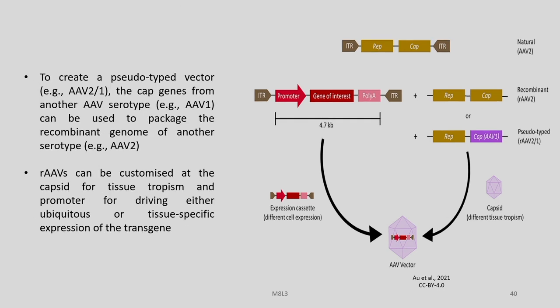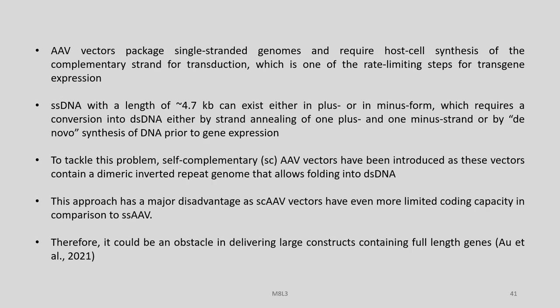To create a pseudotype vector, for example AAV2/1, the cap genes from another AAV serotype can be used to package the recombinant genome of another serotype. AAV vectors can be customized at the capsid for tissue tropism and at the promoter for driving either ubiquitous or tissue-specific expression of the transgene. AAV vectors package single-stranded genomes and require host cell synthesis of the complementary strand for transduction, which is one of the rate-limiting steps for transgene expression. Single-stranded DNA of about 4.7 kilobases can exist either in plus or minus form, requiring conversion into double-stranded DNA either by strand annealing or by DNA synthesis prior to gene expression.